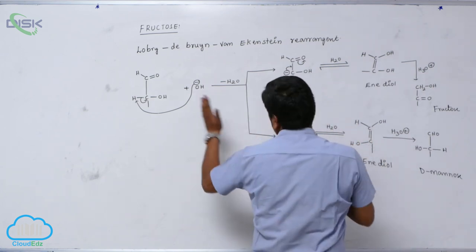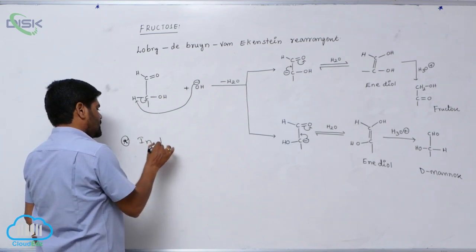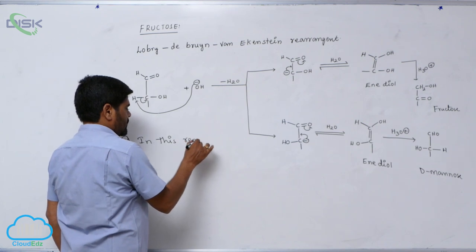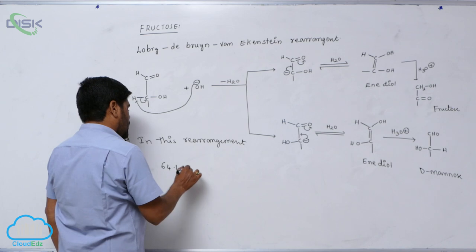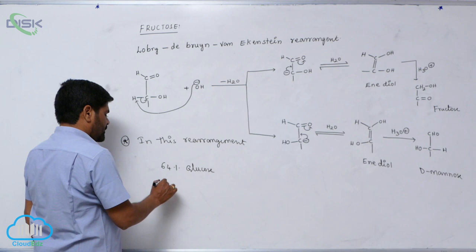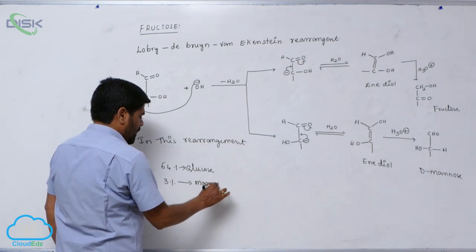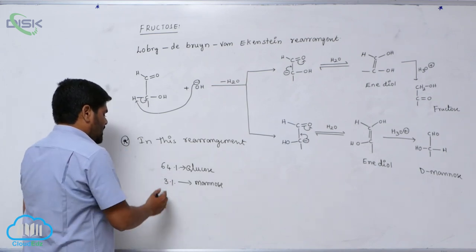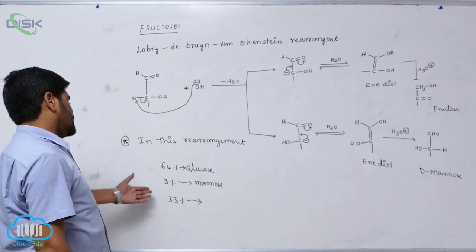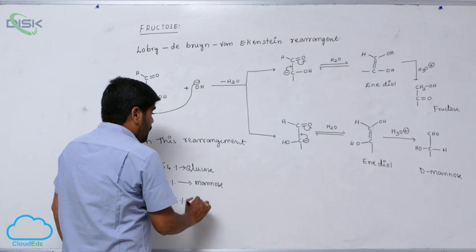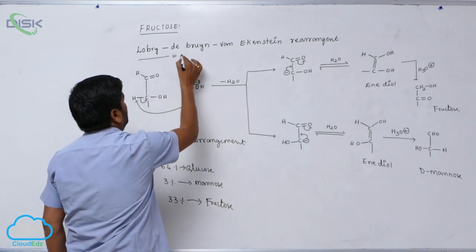In this rearrangement, the conversion goes from one side to the other and back. The products obtained are: 64% glucose, 3% mannose, and 33% fructose. So D-glucose, D-fructose, and D-mannose are all in equilibrium with each other through the enediol intermediate.